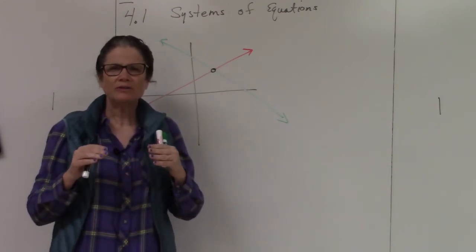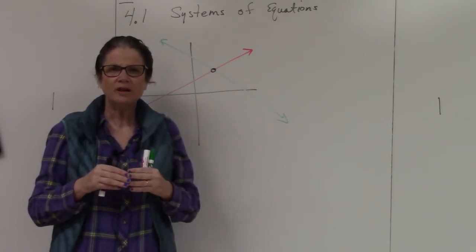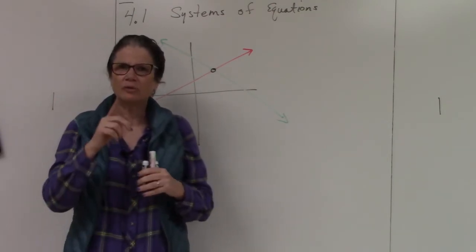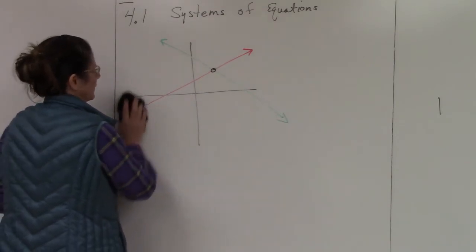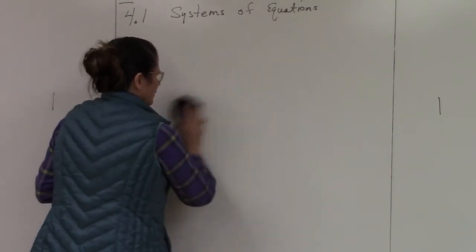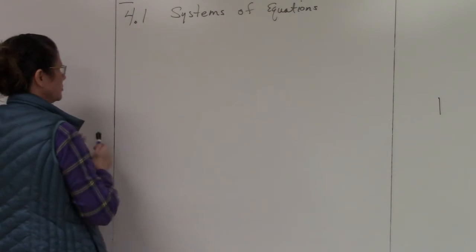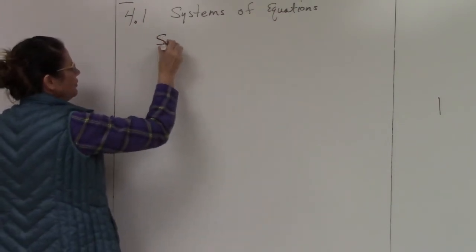But if it's not an exact value, then it's very hard to find. So we're going to find it a different way. The first way is called substitution, so we're going to solve an equation using substitution.